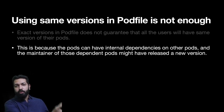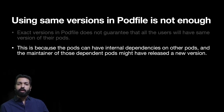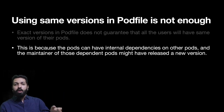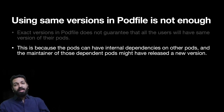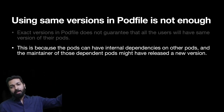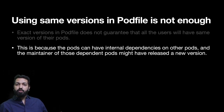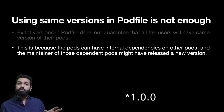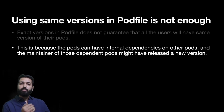Say you have version 1.0.0 of pod A, which internally uses pod A1 at version 2.0.0. You run pod install and get pod A at 1.0.0. A month later a new developer joins and runs pod install, but by then the maintainer of pod A1 has published version 2.1.0. Pod A is still installed at 1.0.0 on the new developer's machine, but he will get version 2.1.0 for the internal dependency pod A1. So while both developers have the same version of pod A, they have different versions of its internal dependency — this is why pushing Podfile.lock to source control is so important.